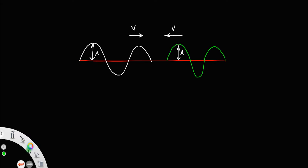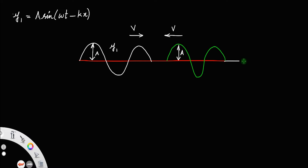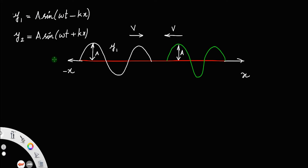We have the expression for a wave traveling towards the right: y1 = a sin(ωt − kx). This represents the displacement of the first wave. For a wave traveling from right to left, in the opposite direction — taking our positive x-axis to the right — y2 = a sin(ωt + kx). This is the displacement relation of a progressive wave.